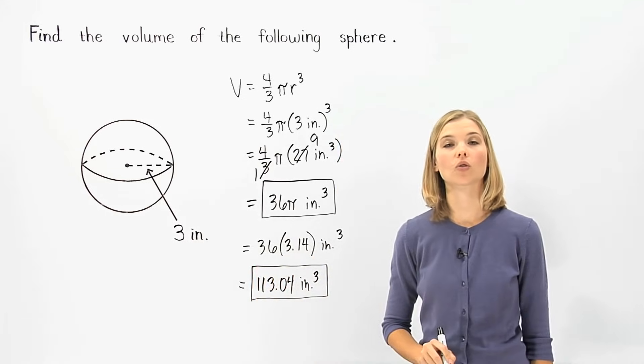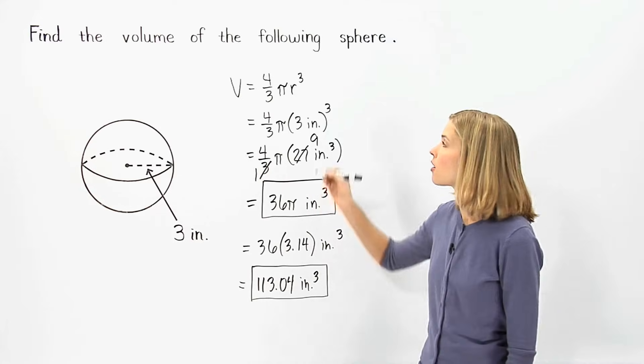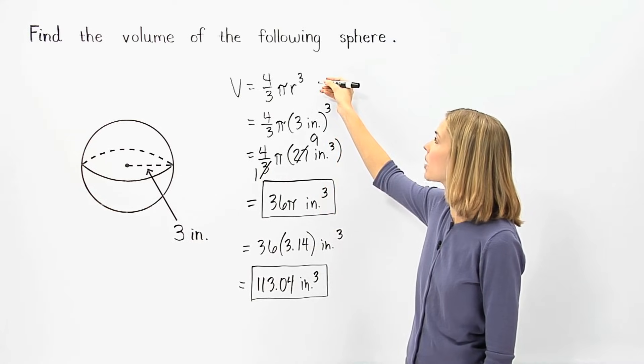So remember this formula for the volume of the sphere: four-thirds pi times the radius cubed.